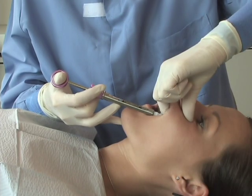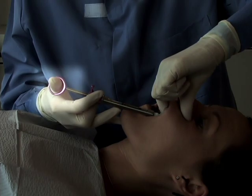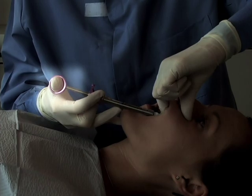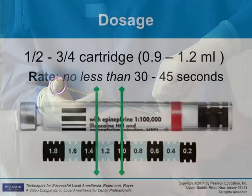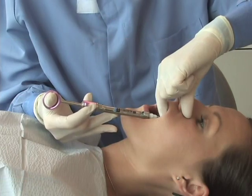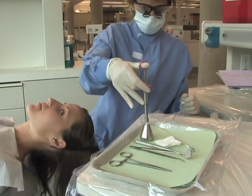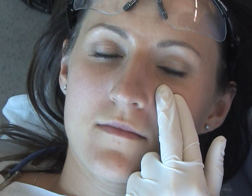For additional stability, you can use your retraction hand as a supplemental fulcrum. Aspirate at the deposition site. Slowly deposit approximately one-half to three-fourths of a cartridge of anesthetic. Gently remove the needle, make your needle safe, and then immediately place direct finger pressure over the infraorbital foramen for one to two minutes after depositing solution to encourage diffusion of the anesthetic into the infraorbital foramen and canal, which will anesthetize both the ASA and MSA nerves.